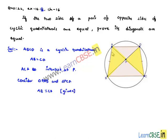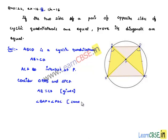Here, if we observe clearly, angle BAP will be equal to angle PDC, since these are the angles formed by the same arc BC. That is, angle BAP is equal to angle PDC, since they are the angles formed by the same arc BC.